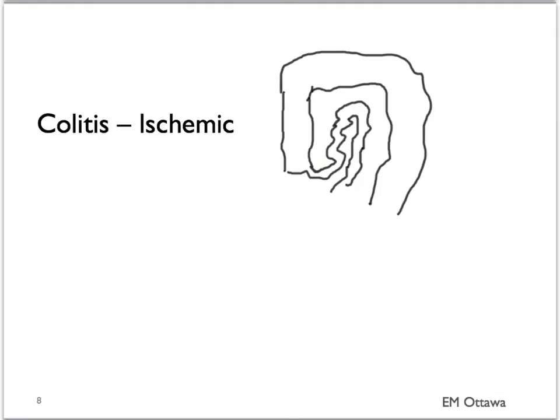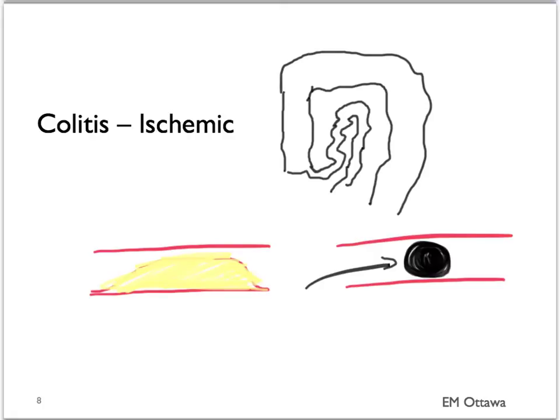Colitis from ischemia can also present as lower GI bleed. Because of decreased blood supply to parts of the bowel, the mucosa sloughing off causes the lower GI bleed. It can be from narrowing of arterial supply from atherosclerosis or from an embolus from atrial fibrillation. Cutting off the arterial blood supply will cause ischemia to that part of the bowel. Patients with ischemic colitis often have severe abdominal pain and would look unwell on examination.